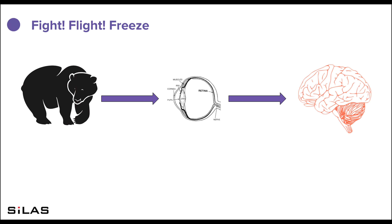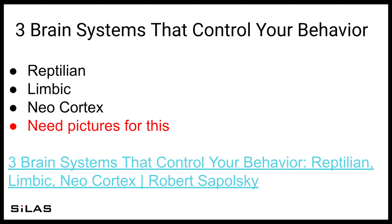Chronic stress can cause an array of health issues. The cortisol released blocks the immune system from doing its job effectively. This can lead to heart disease, cancer, depression, and a number of other health concerns. Have you ever wondered what someone was thinking? In just over seven minutes, this video above explains, in normal people terms, the brain systems that control our behavior and thoughts.